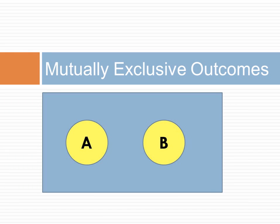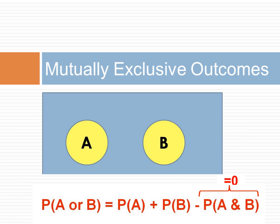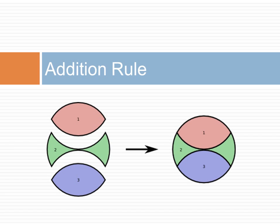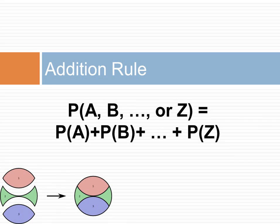Disjoint or mutually exclusive events do not share any elements. This Venn diagram shows two disjoint events. Since there are no shared elements, the probability of both events occurring is zero, and therefore the probability of either event occurring is the sum of the probability of each event. The probability of one of several disjoint events occurring is the sum of the probability of each occurring. This is called the addition rule.